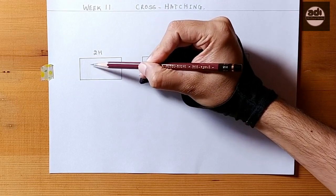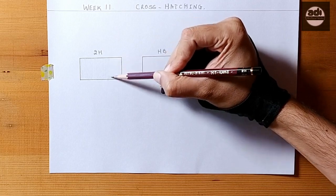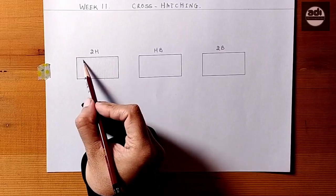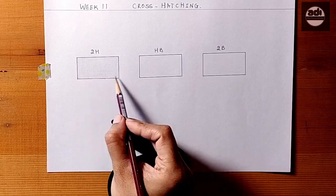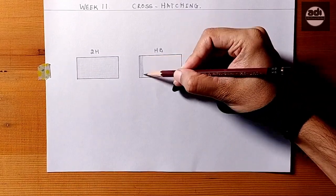For your assignment, you will shade one rectangle every day and shade it using the cross hatching technique. Focus on keeping the space in between the lines even and that the lines are parallel to each other. You want to get a rectangle with even tone.